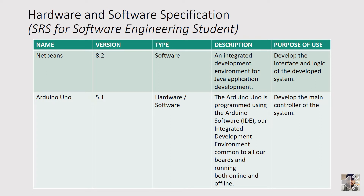For example, using NetBeans: put the name as NetBeans, the version as 8.2, the type as software, and describe it as an Integrated Development Environment (IDE) for Java application development. The last column should mention the purpose — in this case, to develop the interface and logic of the developed system.